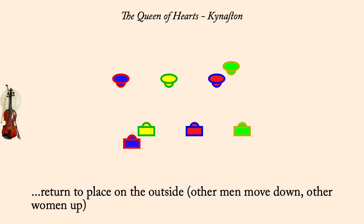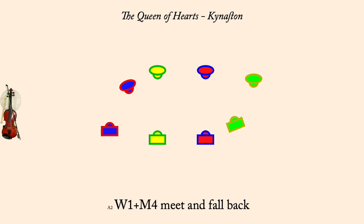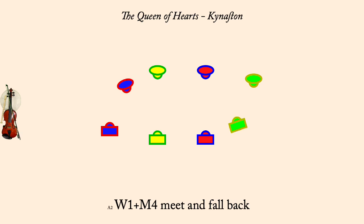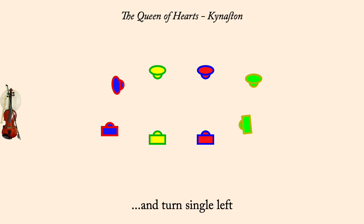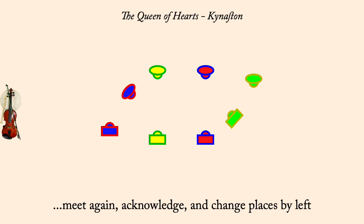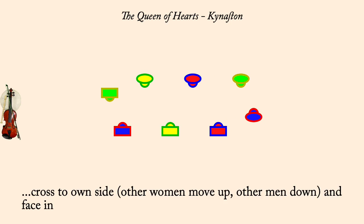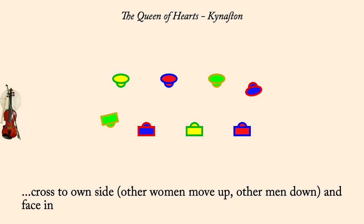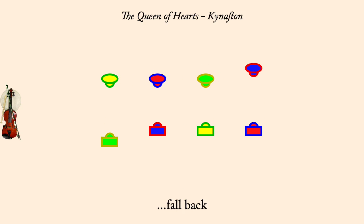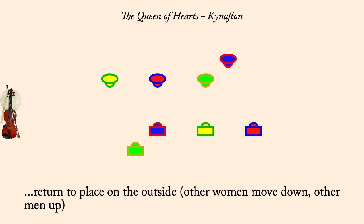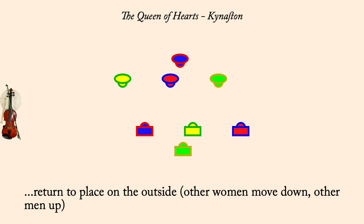Woman one, man four: meet and fall back. And turn single left. Meet again and change by left. Cross to own side, others make room. Fall back. Return to place, others make room.